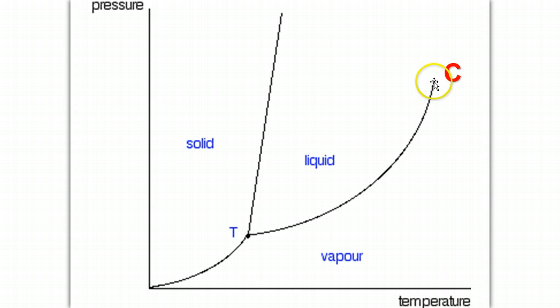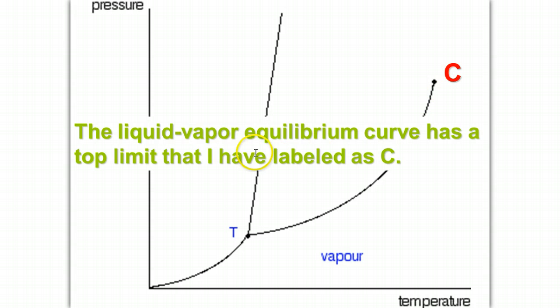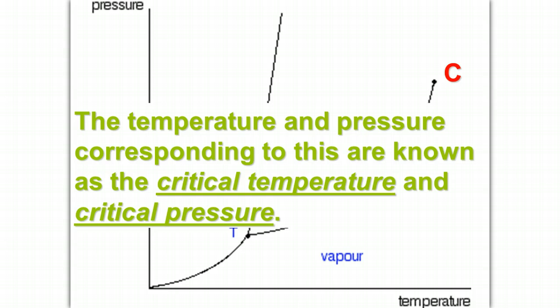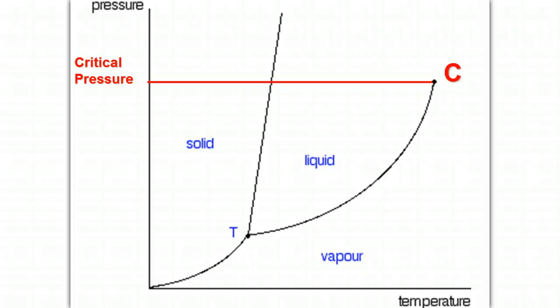C, which represents this spot at the end of the line, is known as the critical point. The liquid vapor equilibrium curve has a top limit that's labeled C. This is known as the critical point. The temperature and pressure corresponding to this are known as the critical temperature and the critical pressure. It's the point at which a liquid, a gas cannot be liquefied. Once you pass the critical point, the substance will remain as a vapor or a gas until the pressure or the temperature or both are reduced.